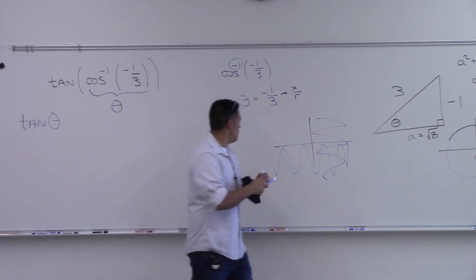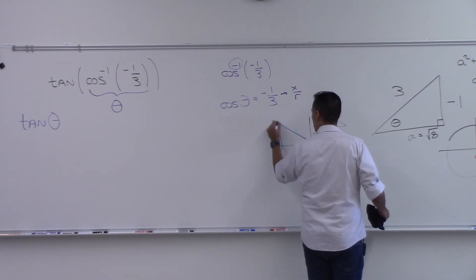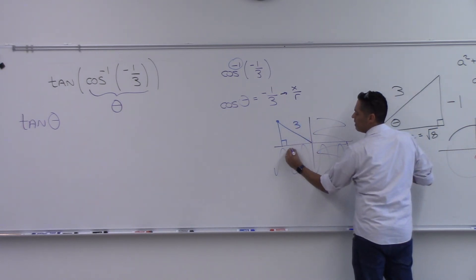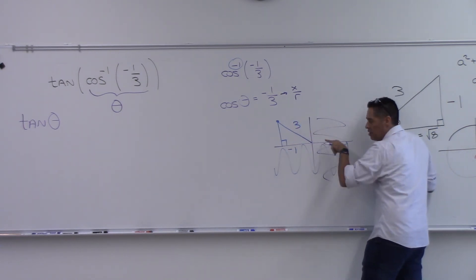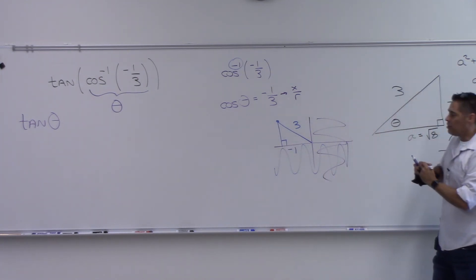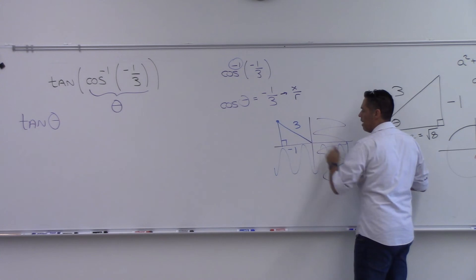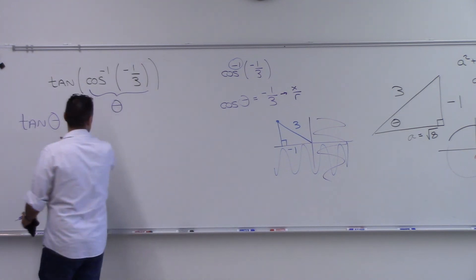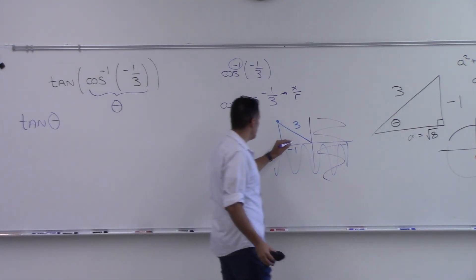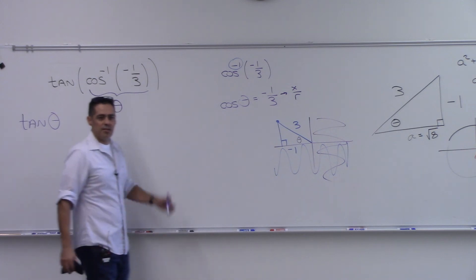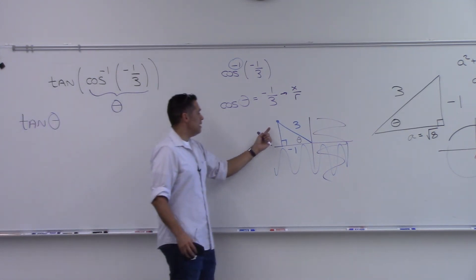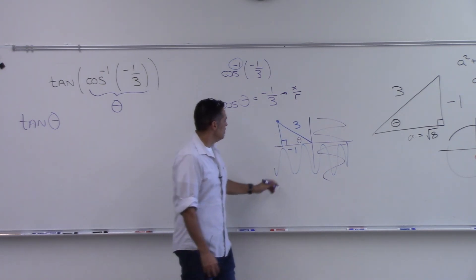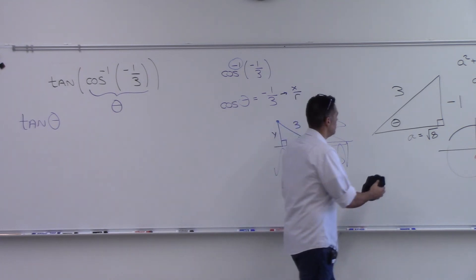I'm going to draw the triangle in the second quadrant: the hypotenuse (r) is 3, and the x-coordinate side is negative 1 (going to the left). We want tangent of θ, which is y over x. So we need the y-coordinate, which I'll call Y.